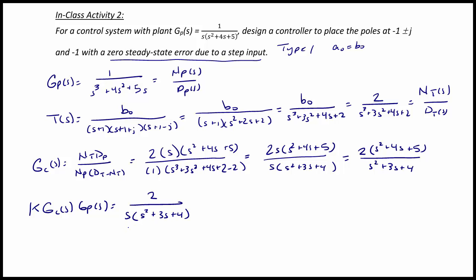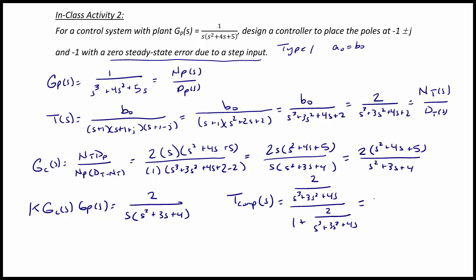As you can see, we still have an integrator, so this is still going to be a type 1 system. Now we will derive the closed loop transfer function to confirm that our design is correct and examine the root locus and the step response. For the compensated system we have 2 over (s cubed plus 3s squared plus 4s), divided by 1 plus 2 over (s cubed plus 3s squared plus 4s), which simplifies to 2 over (s cubed plus 3s squared plus 4s plus 2) — indeed our desired closed loop transfer function.